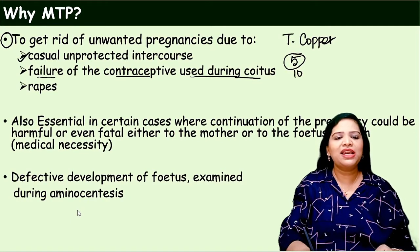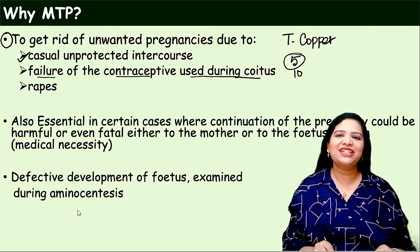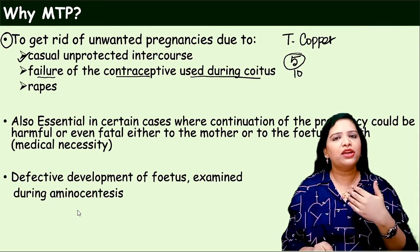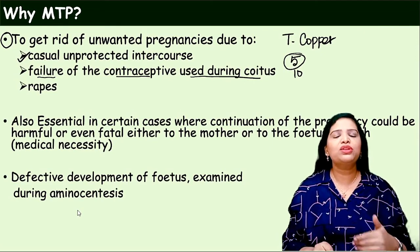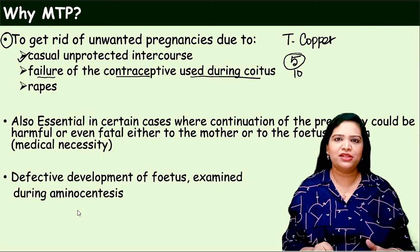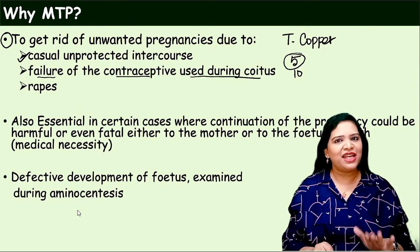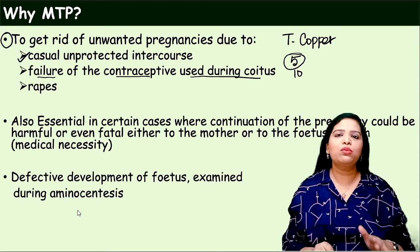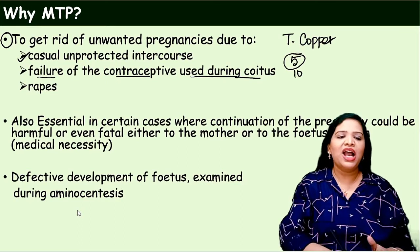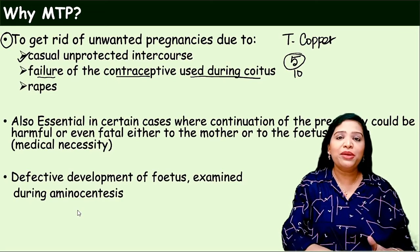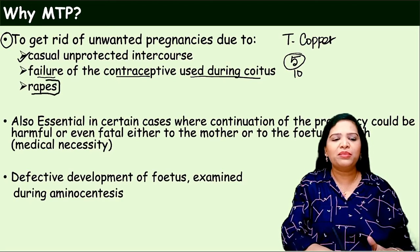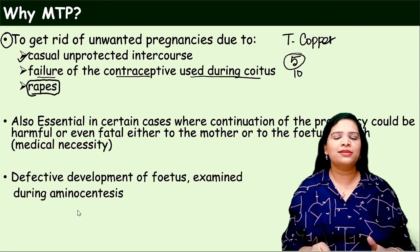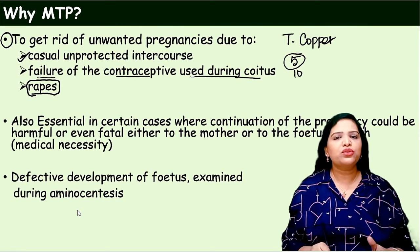Sometimes it is called casual unprotected intercourse. Many young people do sexual intercourse without any contraceptive methods used and accidentally they may get pregnant. During such situations, they want to do the MTP. And very importantly in India, one major reason for MTPs is rape.